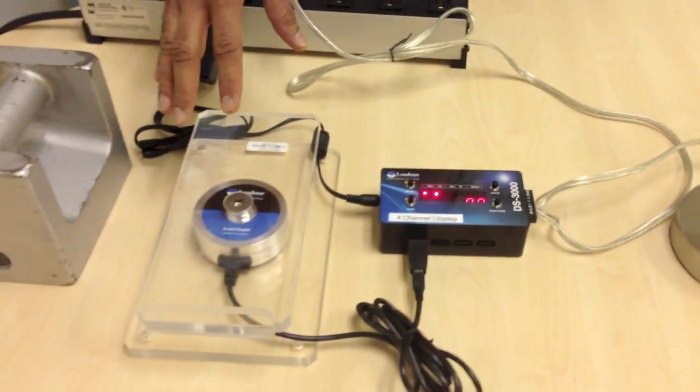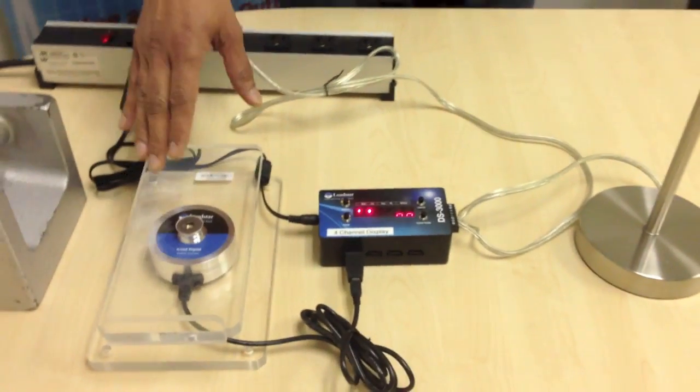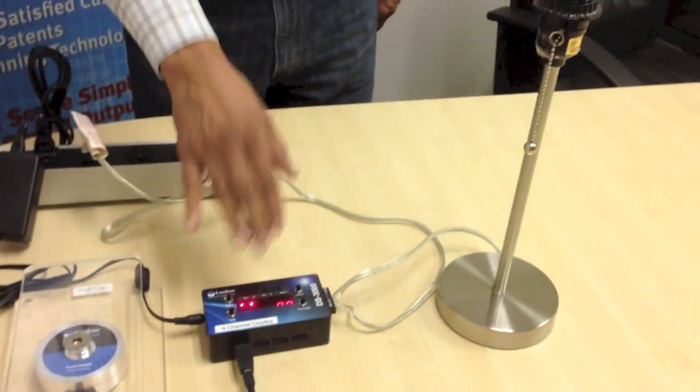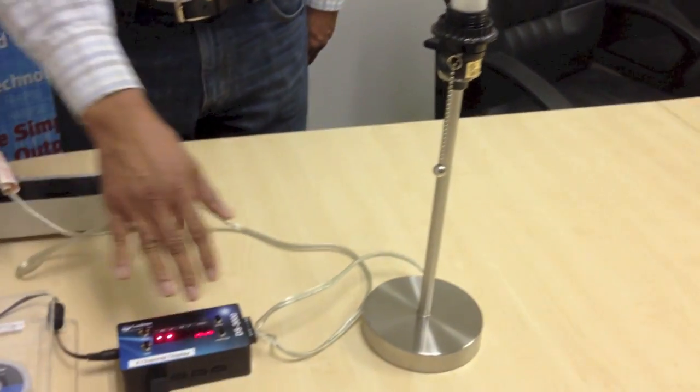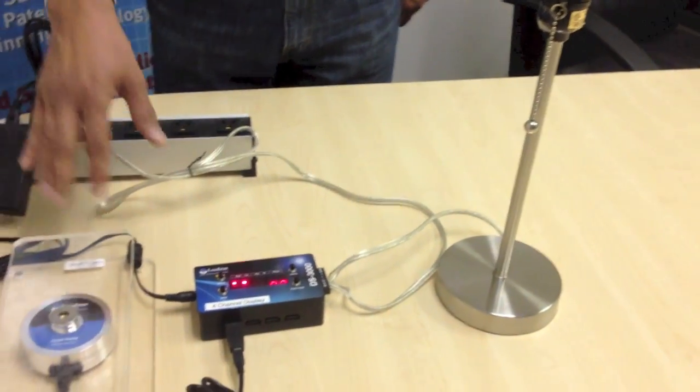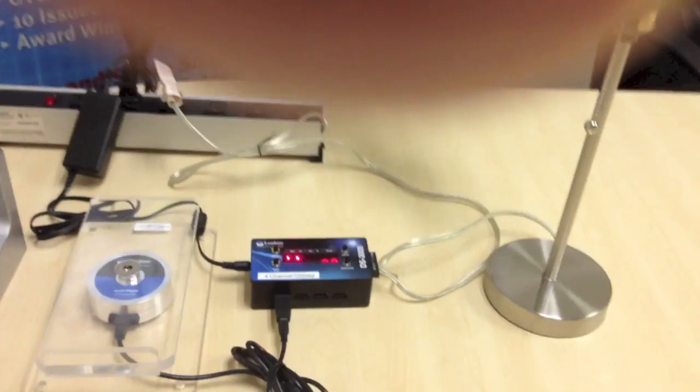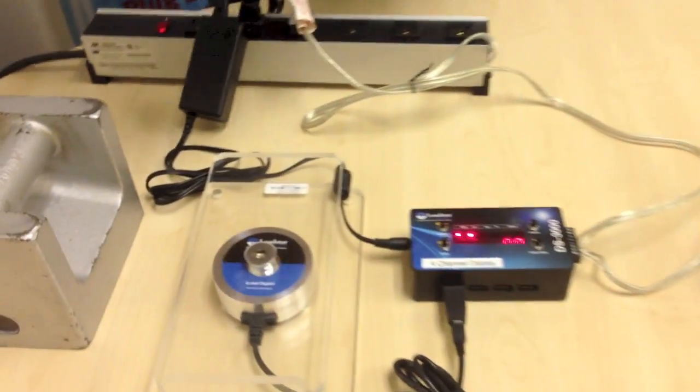And when I place a load on the sensor at a certain level that we have programmed into it, it's going to turn off the lamp, turn on the lamp. So we have programmed this to be at 22 pounds right now. So I'm going to place 22 pounds and at that point the light will go on.